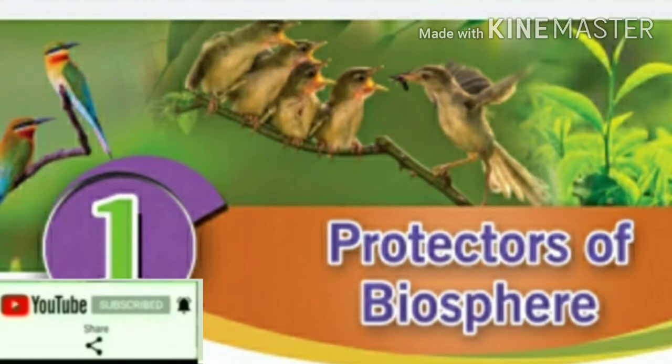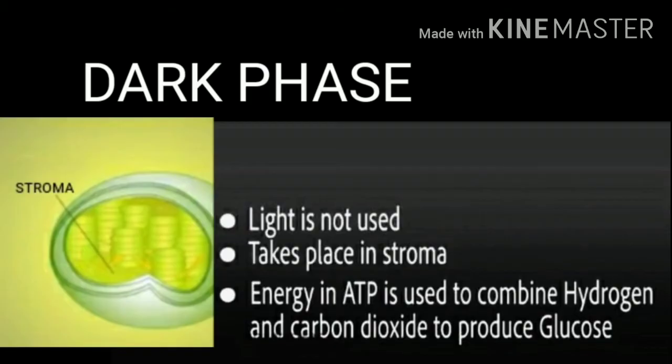Hello students, welcome back to my class. Today we discuss the dark phase. The dark phase takes place in the fluid part of the chloroplast, that is the stroma. Last class we discussed the light phase. In the light phase, ATP and hydrogen are formed. Then, in the presence of ATP and hydrogen, carbon dioxide is combined to form glucose in the absence of light — this is the dark phase.